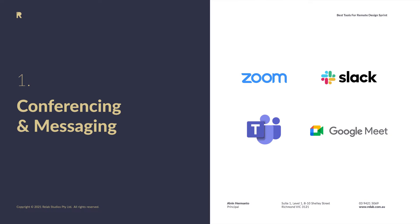The first category is about conferencing and messaging. I've got five different categories here that I'm going to cover, but let's focus on conferencing and messaging first. It's important for us to be able to communicate on a daily basis, throughout the day during design sprint sessions when needed.